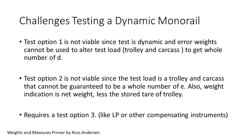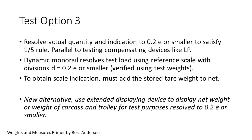There are challenges in testing a dynamic monorail. Test option one is not viable since the initial measurement is dynamic. You can't use error weights in motion to adjust the test load and thus you can't get a whole number of Ds of indication. Test option two is not viable since the test loads are randomly selected—trolley and carcass—and they cannot be expected to be a whole number of E. In addition, the weight indication is net weight less the stored tare of the trolley. We need a third test option. This instrument is akin to the LP meter and other compensating instruments that indicate something other than what was measured. Test option three is a universal option with hybrid options one and two.